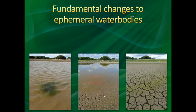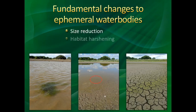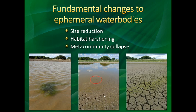How does a water body fundamentally change? A basin fills up with water, and then what happens when it goes away? I want to think about three basic mechanisms: the pool gets smaller, the habitat gets harsher — things like oxygen levels go down, temperature swings and pH swings can get really extreme — and then the whole metacommunity collapses. Those are the three mechanisms, and we'll look at some of the patterns and disassembly rules we can make from that.